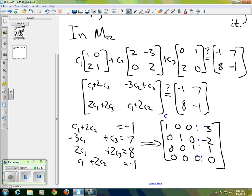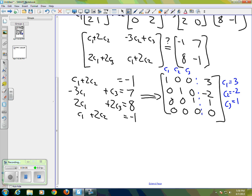So the first column represents the scalar C1, second column C2, third column C3. So we can see what we have is that C3 equals 1, C2 equals negative 2, and C1 equals 3. So we can see, then, that if we do the linear combination.